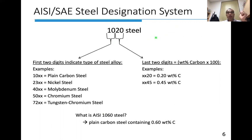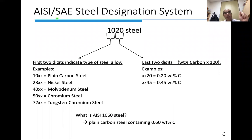Let's discuss how to name different steels. We have two naming systems: AISI — American Iron and Steel Institute — and SAE — Society of Automobile Engineers. Generally we just use AISI. If you look at a steel designation, you may have a four-digit number like 1020.